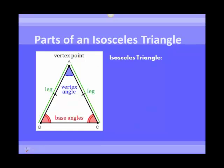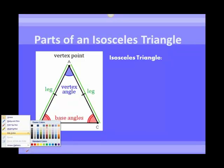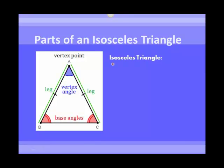As a little reminder, an isosceles triangle is a triangle with at least two congruent sides. If we look here at this triangle, it is isosceles. The two congruent sides are side AB is congruent to side AC.